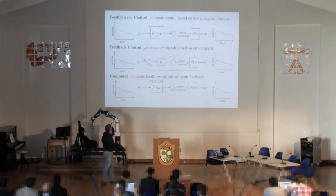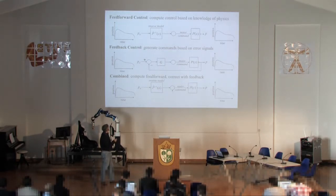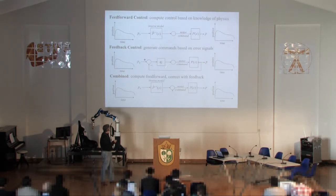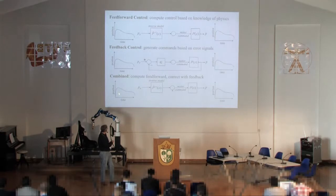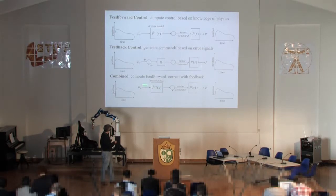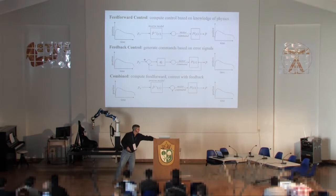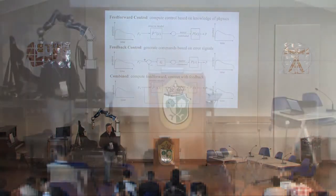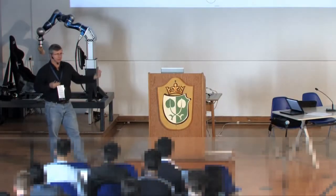To get us back into things: feed-forward control means you invert what you think your plant is supposed to do and use that to generate your motor command. Feedback control says I don't need to know how the plant acts — I just measure where I am, compare it to where I want to be, and multiply by some gain factor. We can combine the two: compute the best guess of what the motor system will do, invert that, generate a motor command, and add a feedback correction on top. It's not one or the other — we can do both.